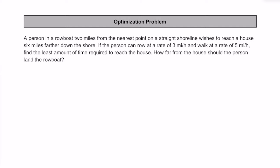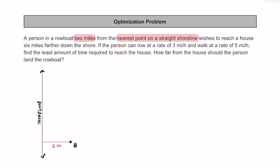Let's try solving an optimization problem together. In this problem, there's going to be a person in a rowboat, and this rowboat is going to be two miles from the nearest point on a shoreline. It's going to be a straight shoreline, and if it's going to be the nearest point, then it's got to be perpendicular. So imagine that this is the straight shoreline, and the person in the rowboat is going to be right here at this point. I'm going to call this point B for the rowboat. They're two miles from the nearest point on the shoreline, so this distance right here is going to be two miles.